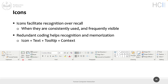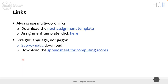As long as Microsoft doesn't change this icon, users retain their knowledge and familiarity — they upgrade to a new version and can use it from day one. That is very important to avoid disorienting users. Finally, regarding links: always try to use multi-word links. 'Download the next assignment template' is good. 'Click here' is bad — it doesn't tell you what happens. The linked text should describe the destination, and using multiple words makes it easier to click. Use plain, straight language like 'spreadsheet for computing scores.'